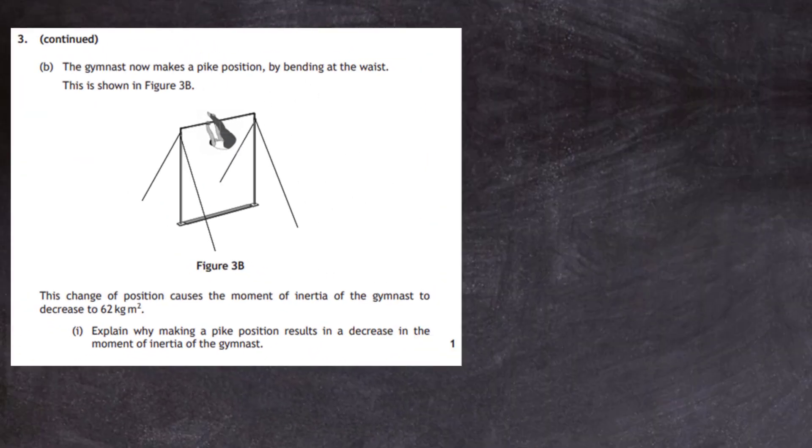Question 3b. The gymnast now makes a pike position by bending at the waist, and this is shown in figure 3b. This change of position causes the moment of inertia of the gymnast to decrease to 62 kilogram meter squared. And for one mark we are asked to explain why making the pike position results in a decrease in the moment of inertia of the gymnast.